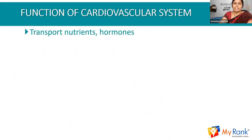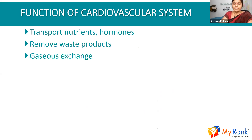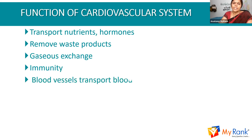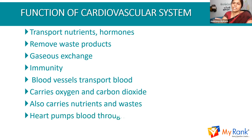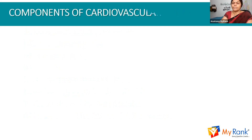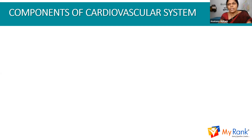The functions of the cardiovascular system: it transports nutrients and hormones to the body, removes waste products from the tissues, and enables gaseous exchange. Gaseous exchange mainly occurs at the capillary stage, and because of the blood, immunity will develop. Blood vessels transport blood carrying oxygen and carbon dioxide, as well as nutrients and waste from the tissues. The heart pumps blood through blood vessels. From the heart, oxygenated blood goes out and supplies the body. This is called the closed circulation system.